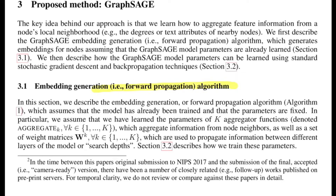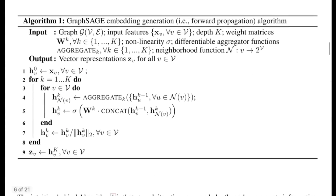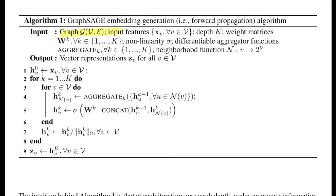Looking at the forward propagation algorithm, we assume training is already done and we have all k aggregator functions trained with parameters fixed. Each aggregator function is denoted accordingly, and the weight matrix at every level is given by W superscript k, where k corresponds to the hop level. The input to this function is a graph with V vertices and E edges, plus an input feature representation for every node — which could be node degree or a one-hot encoded vector.